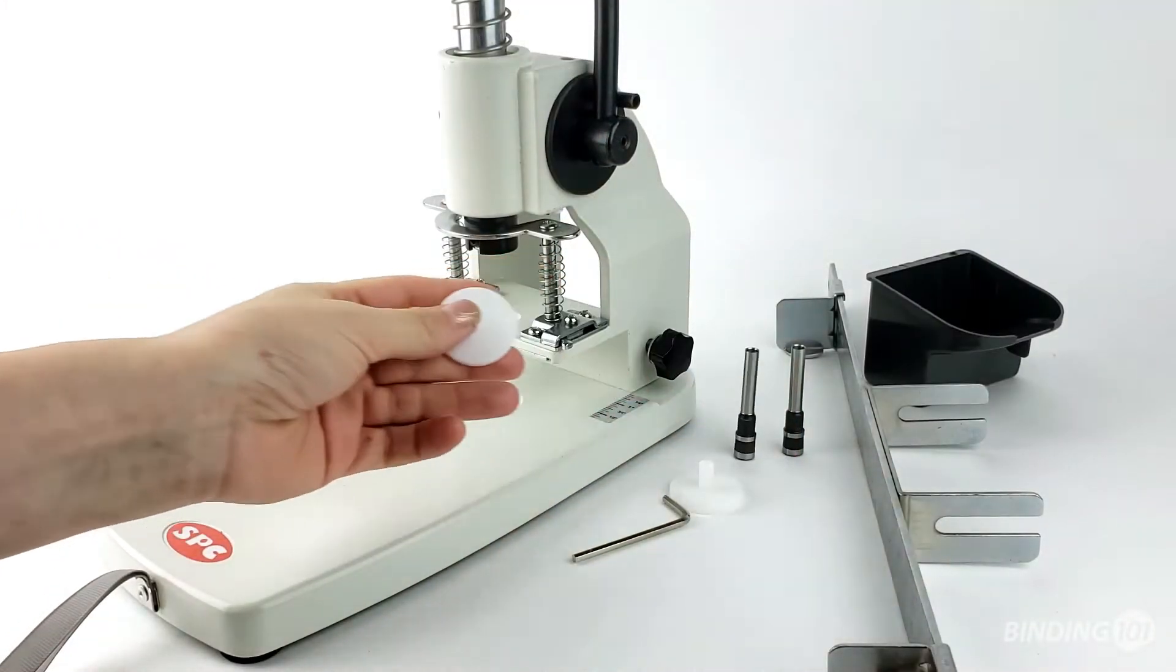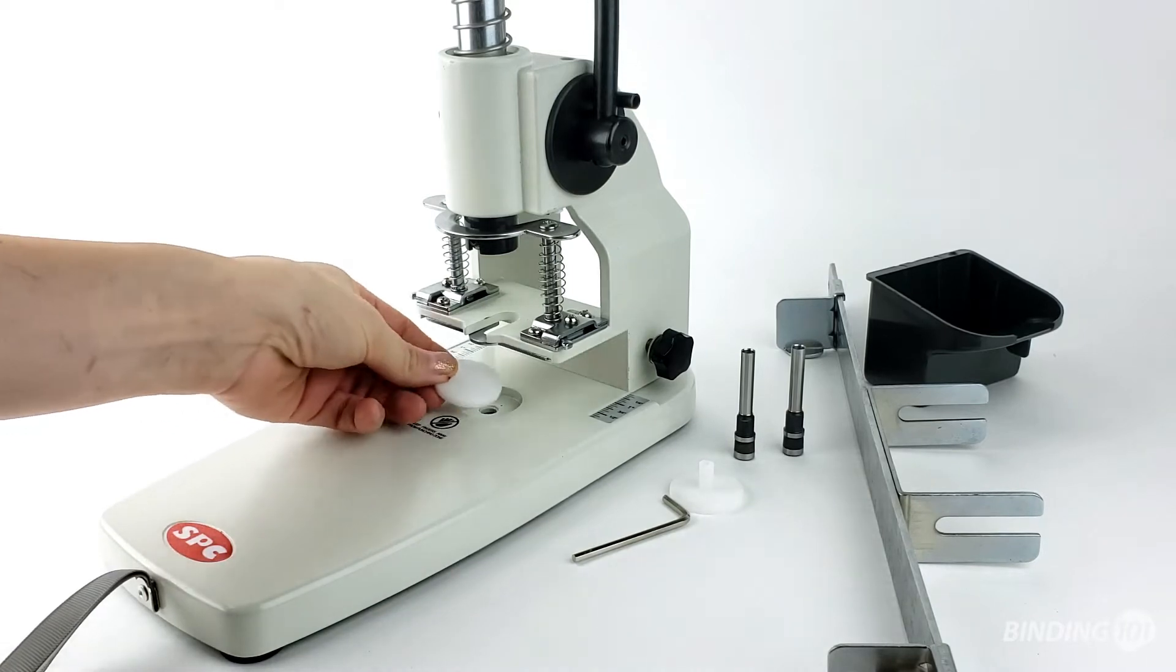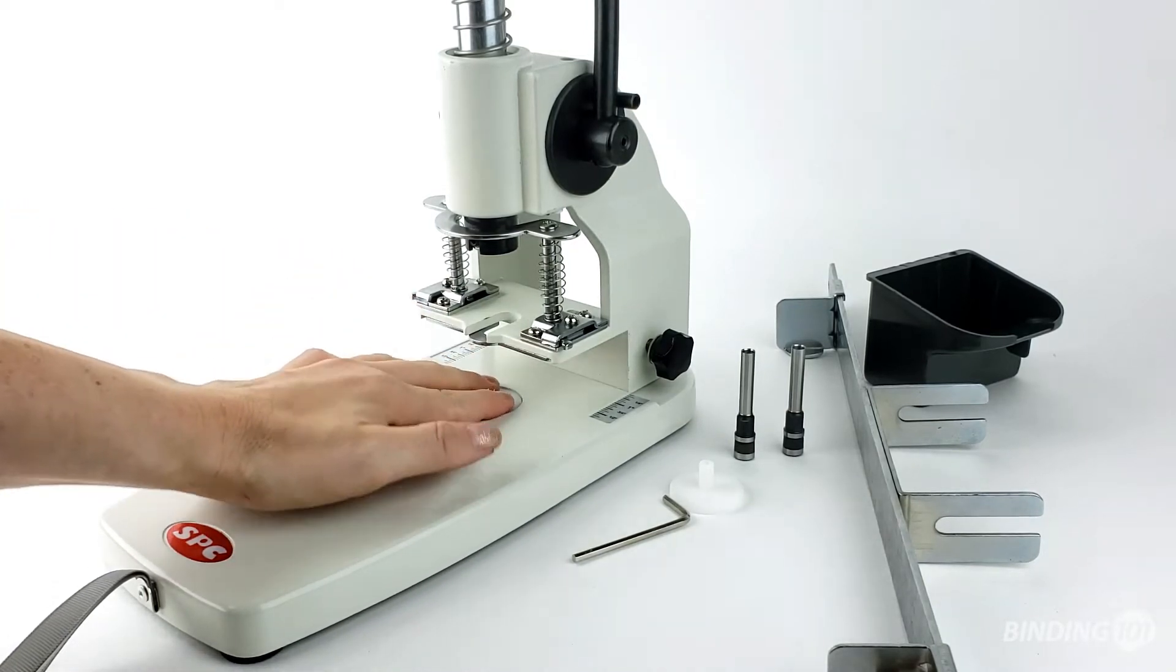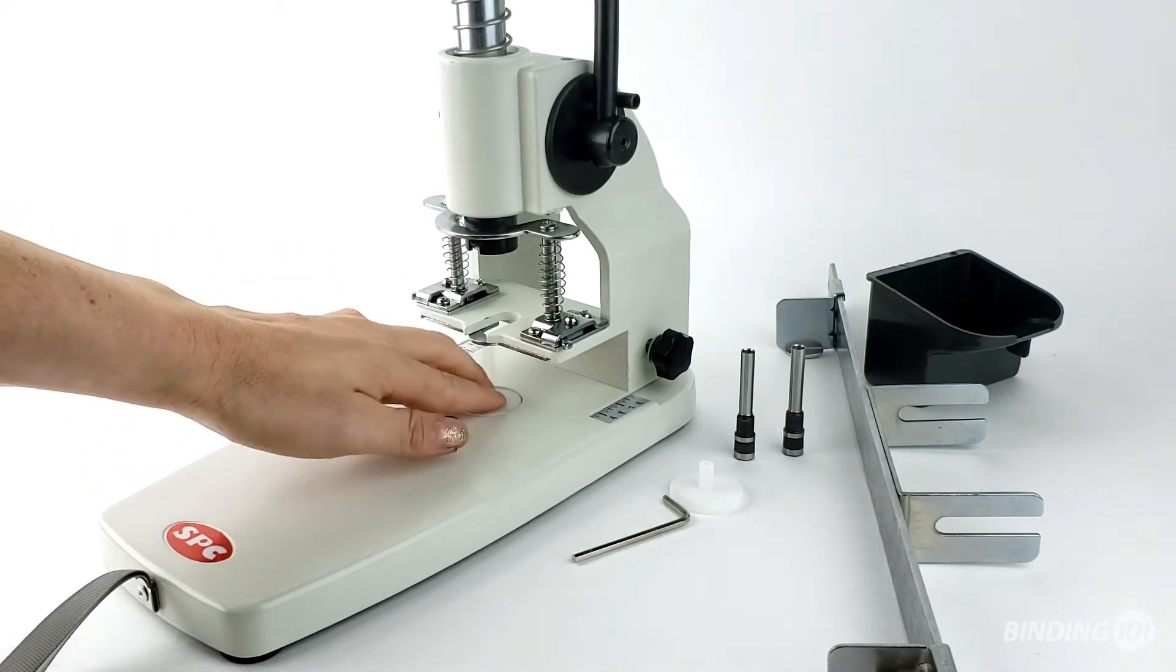Now you want to be sure the punch pad is installed. Simply place the plastic round pad into the base below the drill bit with the flat side up.